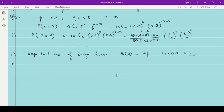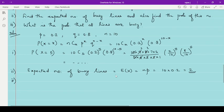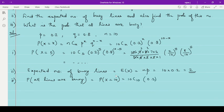And third we need to get probability that all lines are busy. So probability that all lines are busy is given by P of X equal to 10, means the probability that all the 10 lines are busy. This is given by 10C10 then 0.2 raised to x, x means 10 and 0.8 raised to 10 minus 10.